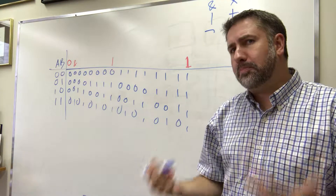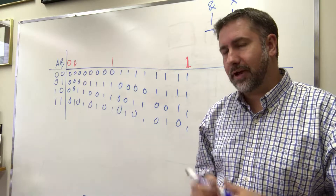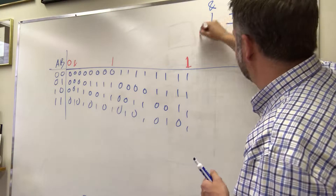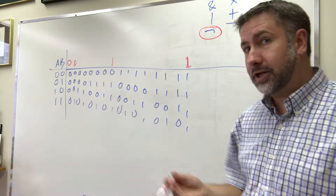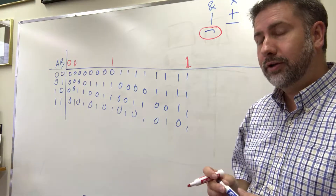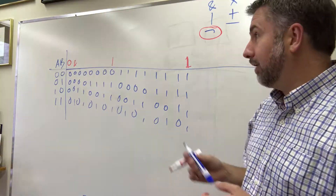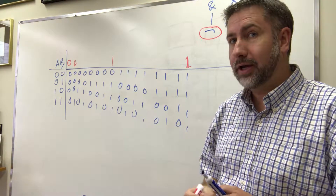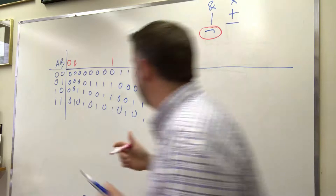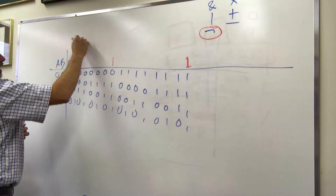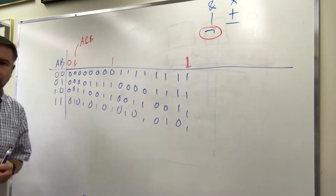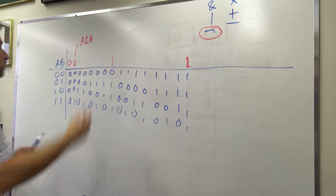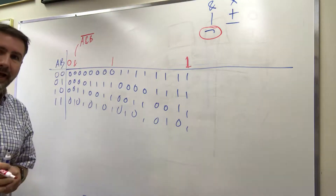We can start to combine some of these functions together and maybe make something a little bit more interesting. One of the things we haven't looked at at all is NOT, because NOT is really a function only of one variable. But we can tack on an inversion after we apply a function. So if we say this one corresponds to A AND B, that's one function. There's also a function like this: NOT A AND B.